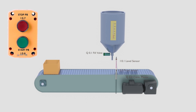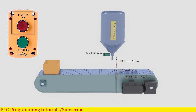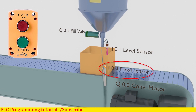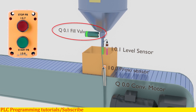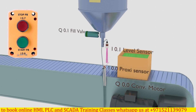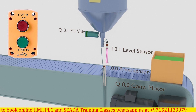Today we have a box filler machine to program. This machine starts the process with the start push button I 0.6 and stops with the push button I 0.7. It has a conveyor to transport the box, which runs with PLC output Q 0.0. Box presence at the filling station is confirmed by the box sensor I 0.0. Once the box is at the filling station, the filling valve Q 0.1 opens and starts filling liquid into the box. Once the box is filled, the fill level is confirmed by the level sensor I 0.1. The filling valve closes and the conveyor starts again to remove the filled box and bring in the next empty box under the filling nozzle.